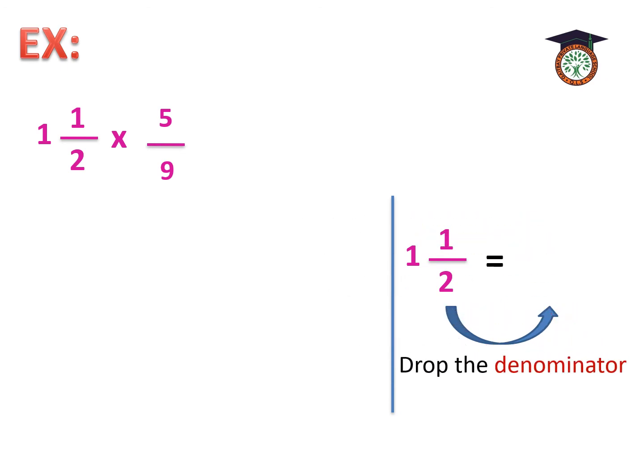The last example we have here today. 1 and a half times 5 over 9. When we find a mixed number with a proper fraction, what shall we do? The steps will be the same, but we have to convert mixed number to improper fraction. 1 and a half will be, as we took it last year, we are going to keep the same denominator, which is 2. And we are going to make 2 times 1 equals 2 plus 1 equals 3. So, the answer will be 3 over 2 times 5 over 9.